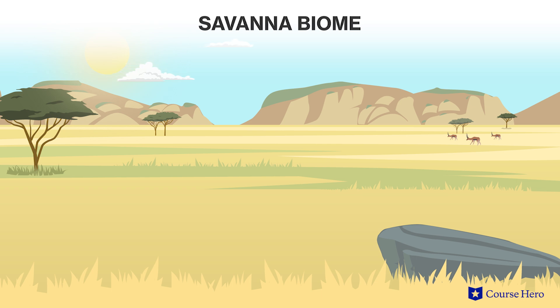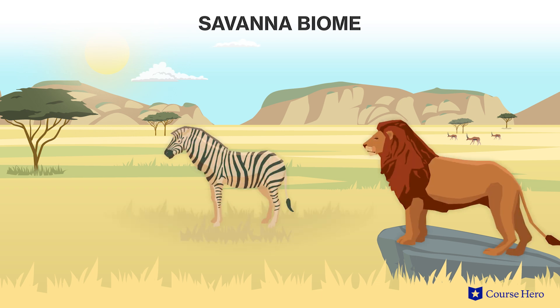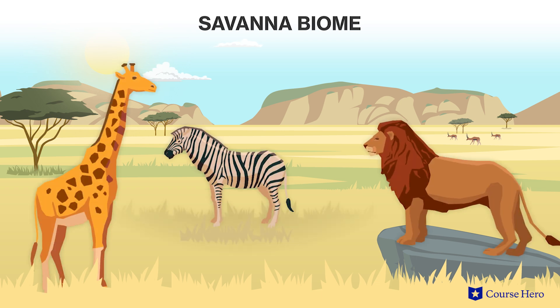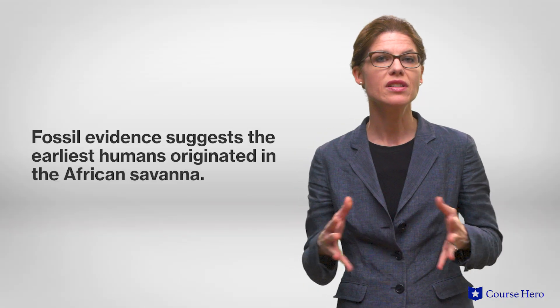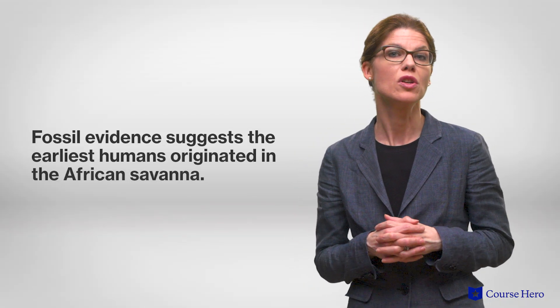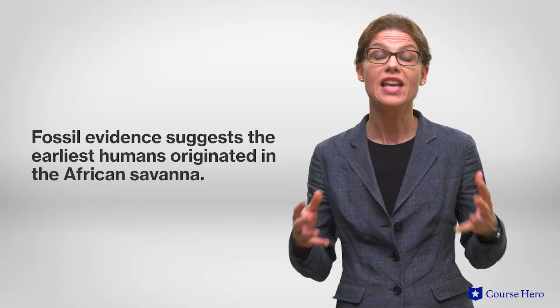Examples of animals that can be found in savannas include large mammals such as lions, zebras, giraffes, and elephants. Fossil evidence suggests that the earliest humans originated in the African savanna. However, modern humans are over-hunting the current large mammal inhabitants, such as the black rhino and the Indian elephant, which has resulted in now endangered species.